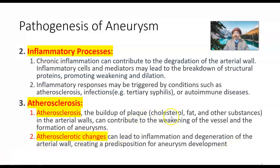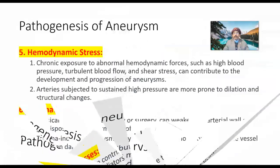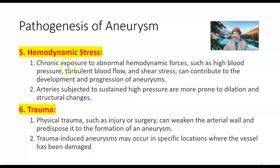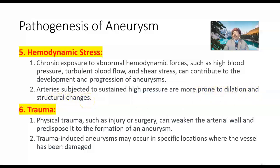Atherosclerosis — the buildup of plaque, cholesterol, fat, and other substances in the arterial wall — can contribute to weakening of the vessel and formation of aneurysms. Atherosclerosis can lead to inflammation and degeneration of the arterial wall, creating a predisposition for aneurysm development. Hemodynamic stress: chronic exposure to abnormal hemodynamic forces such as high blood pressure, turbulent blood flow, and shear stress can contribute to the development and progression of aneurysms. Arteries subject to sustained pressure are more prone to dilation, so persons with hypertension have a higher chance of aneurysm.